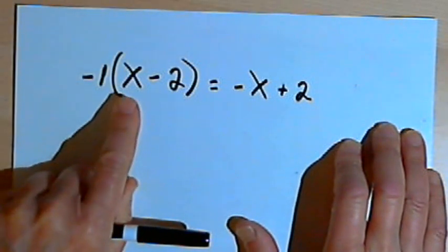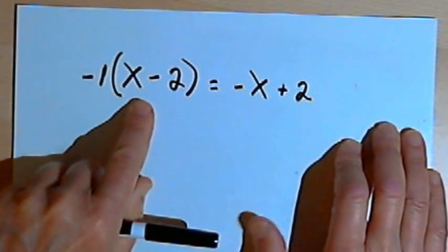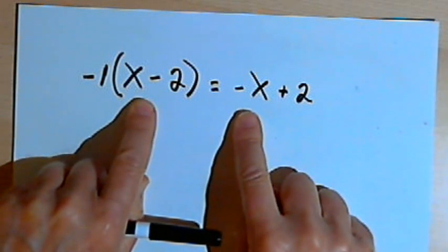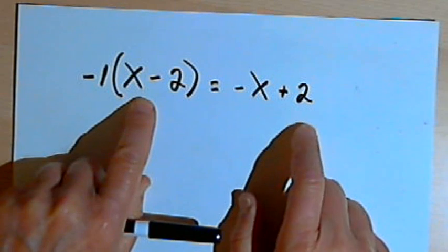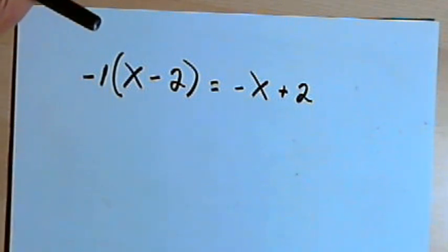So the additive inverse of x minus 2 is going to be negative x plus 2. That's the basic idea. Take care. I'll see you next time.